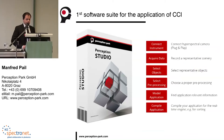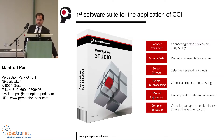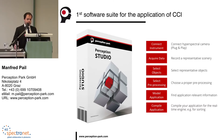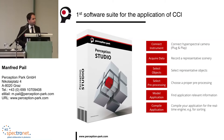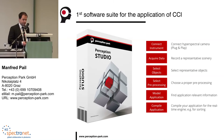How can we apply that? The easiest way is to use the Perception Studio. It is the first software for the application of chemical color imaging, and it provides a very easy-to-use six-step workflow. Just connect a camera — plug and play — record a representative scene, select representative objects, apply some pre-processing, and then you can directly start modeling your application to find your application-relevant information.